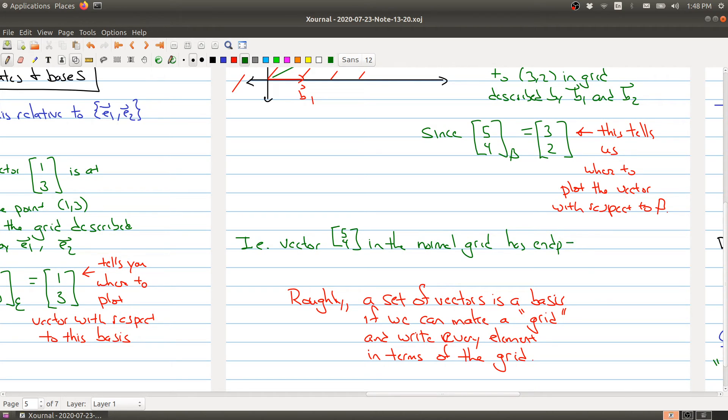in the grid defined by B. And you can actually think about what's going on here more generally, which is roughly a set of vectors as a basis if we can make a grid and write every element in terms of this grid.